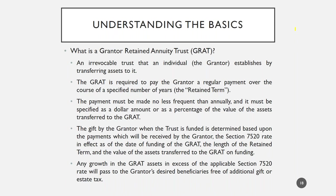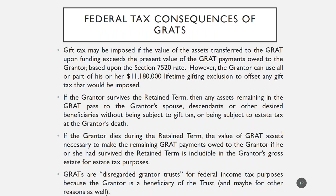We look at the retained term and the number of annuity payments, and using current rates and tables, we can determine the present value of all those annuity payments. The gift made on formation is the difference between the retained term value of those payments and the actual fair market value of the assets contributed to the GRAT. Most practitioners feel it's acceptable to 'zero out' a GRAT — meaning you set the annuity stream equal to the assets placed in the GRAT so that there is no taxable gift on funding and no gift tax return needs to be filed. Any assets remaining in the GRAT at the end of the term pass into a remainder trust, free of estate tax and without using any further gift exemption.